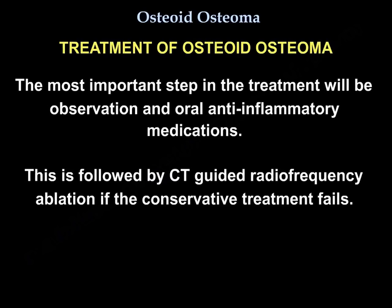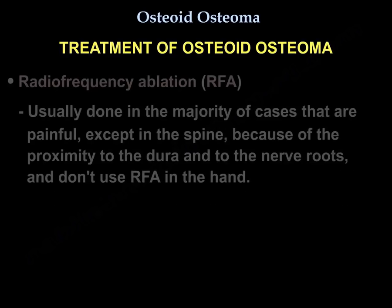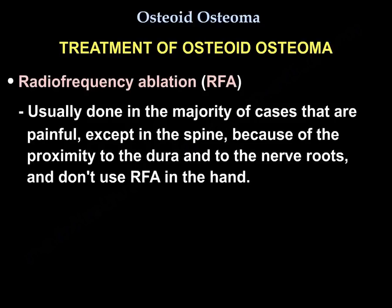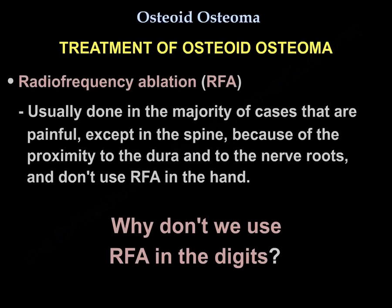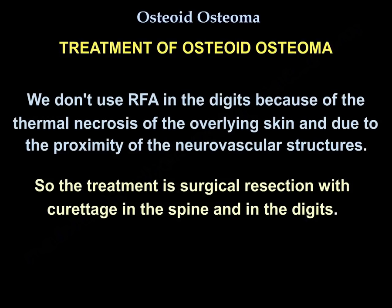The most important first step in treatment is observation and oral anti-inflammatory medications. This is followed by CT-guided radiofrequency ablation if conservative treatment fails. Radiofrequency ablation is used in the majority of painful cases, except in the spine due to proximity to the dura and nerve roots, and is also avoided in the hand and digits because of thermal necrosis of the overlying skin and proximity to neurovascular structures. In those cases, the treatment is surgical resection with curettage.